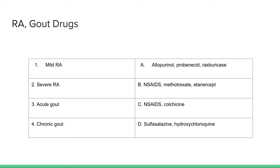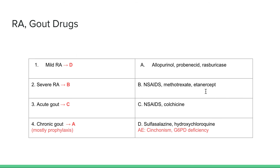Moving on to rheumatoid arthritis and gout drugs. For mild RA you start with sulfasalazine and hydroxychloroquine; adverse effects include cinchonism and G6PD deficiency. For severe RA you use NSAIDs, methotrexate, and etanercept. For gout: acute gout is treated with NSAIDs and colchicine. Chronic gout prophylaxis uses allopurinol, probenecid, and rasburicase. That concludes this short high-yield MSK review.